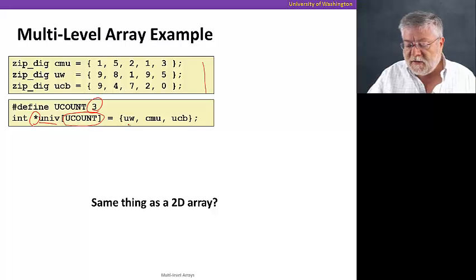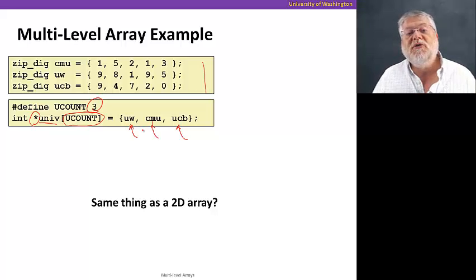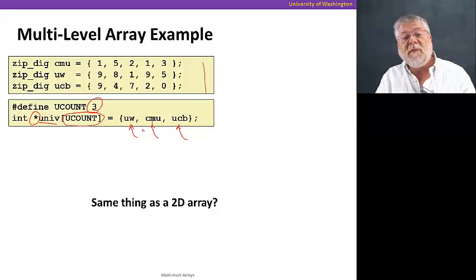and the three elements will be three one-dimensional arrays from above. And you'll see that that looks like it should be a two-dimensional array, right? We've just organized three zip codes into an array of three elements, each element having five digits. But is this a two-dimensional array? Well, it's not. It's a little bit different.